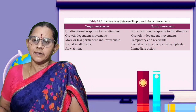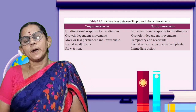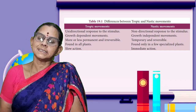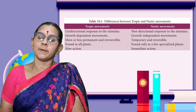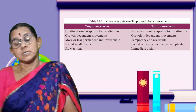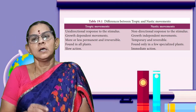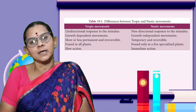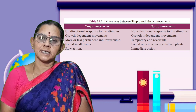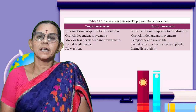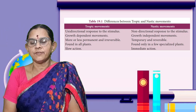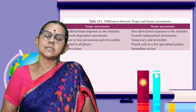Nastic movement is temporary and reversible. Tropic movement is found in all plants. But nastic movements are specialized to certain plants. Tropic movements are shown in slow action, but nastic movements show fast action. These are the differences between tropic and nastic movements.